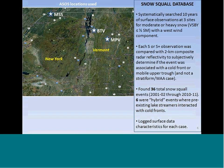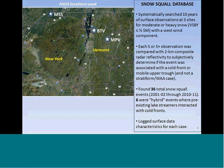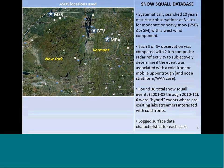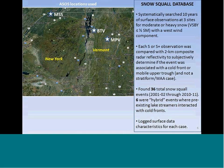To develop the snow squall database, we took sites in our forecast area — Messina, New York; Berlin; and Montpelier, Vermont — and systematically searched through ten years of surface data at three sites looking for current moderate-to-heavy snow, visibility of a half mile or less, and a westerly wind component. That westerly wind filter helps screen out typical nor'easter northeast-wind events. Each observation was then compared with two-kilometer composite radar reflectivity to subjectively determine if the event was indeed associated with a cold front or mobile upper-level trough and not a stratiform event.